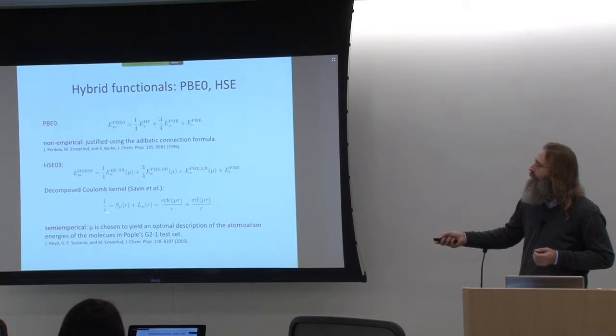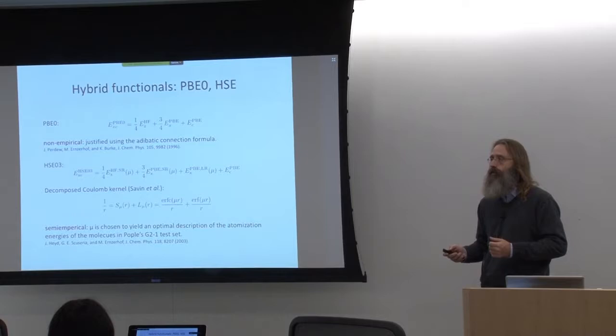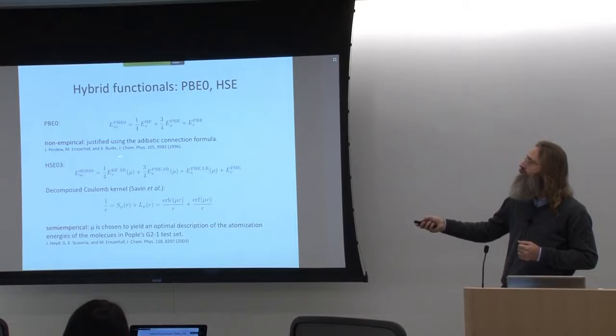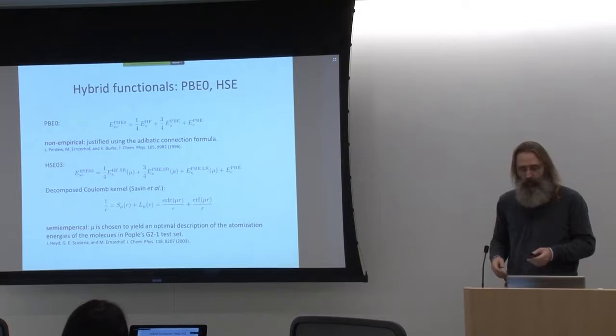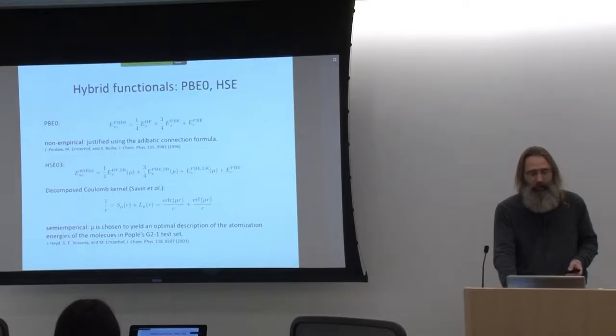The original thought behind HSE was that it was implemented in a Gaussian basis code: by limiting the range of the interaction, there are fewer integrals to compute. So it was conceived as a cheaper variety of PBE0. But it has some qualities of its own — it is cheaper to use than PBE0 also in plane wave codes, and it has some nice properties in its description of physics that are different from PBE0. So it is a bit more than just a cheaper variety of PBE0, but it is semi-empirical in that sense.